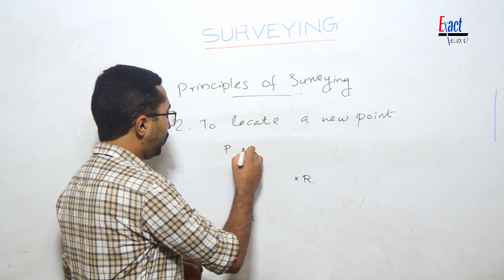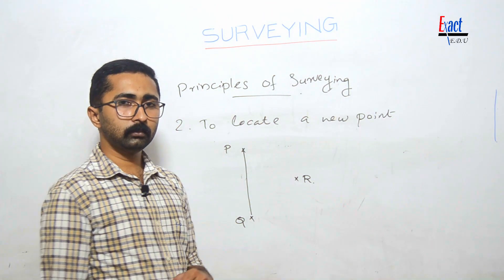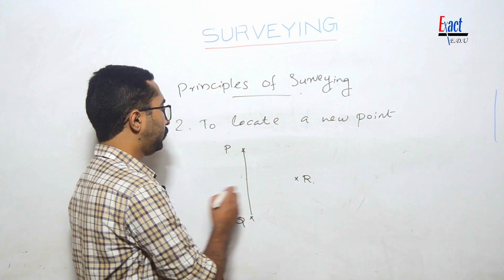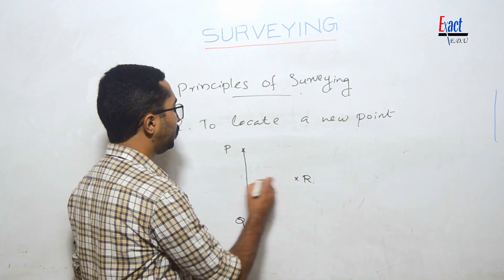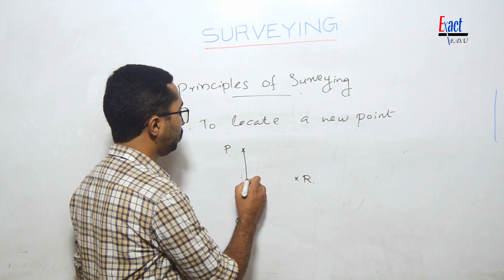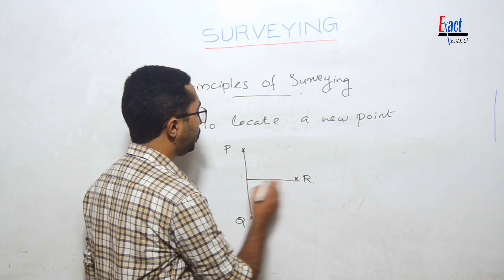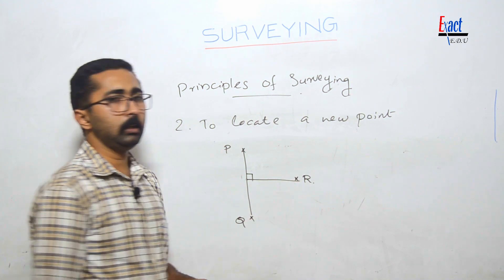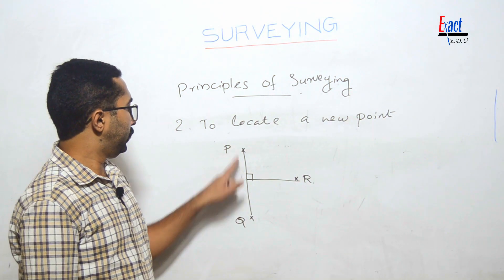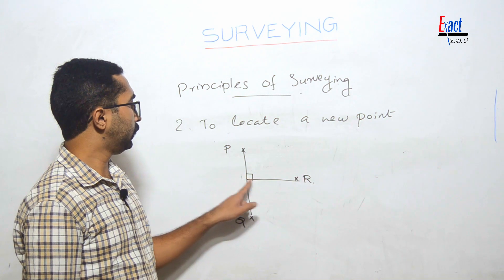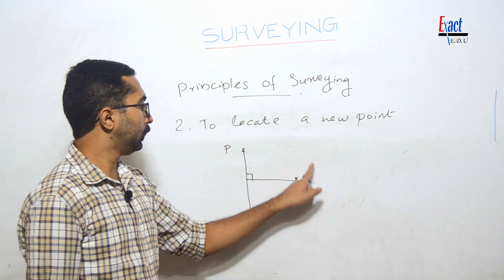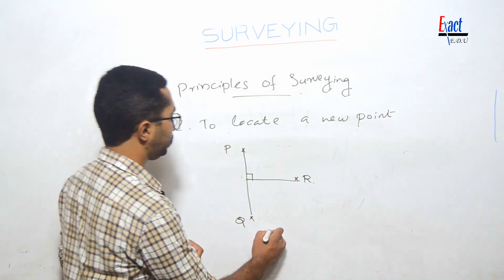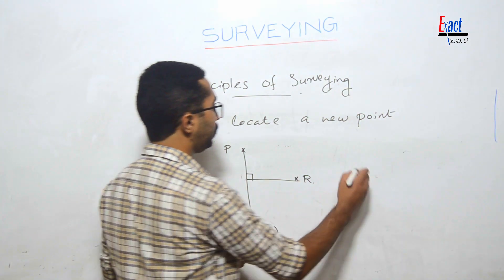Using the distance from P and the perpendicular distance, point R can be located. Another method is to use linear measurements PR and QR from the reference points P and Q to locate point R.